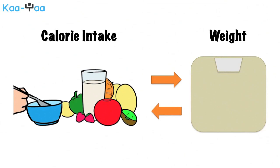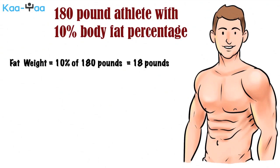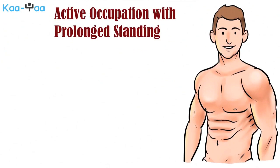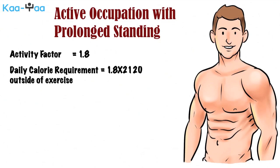Let's do a sample calculation to better understand how to calculate daily calorie needs. Consider a 6-foot-tall athlete who weighs 180 pounds and has 10% body fat. The weight of fat in his body is 10% of 180 pounds, or 18 pounds. Subtracting this from his overall weight gives his fat-free mass: 180 minus 18, or 162 pounds. His resting metabolic rate is then calculated as 500 plus 10 times his fat-free weight: 500 plus 10 times 162 equals 2,120. Suppose he has an active occupation with prolonged standing, so his activity factor is 1.8. His daily calorie requirement outside of exercise is 1.8 times 2,120, which equals 3,816.